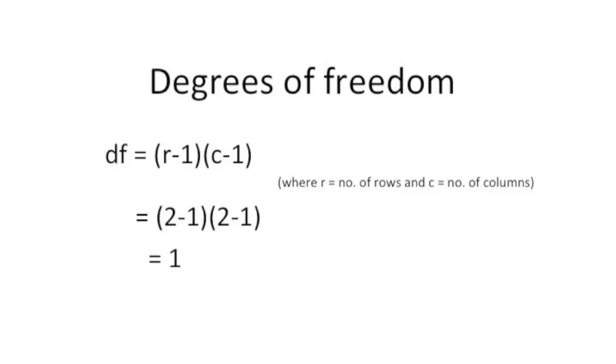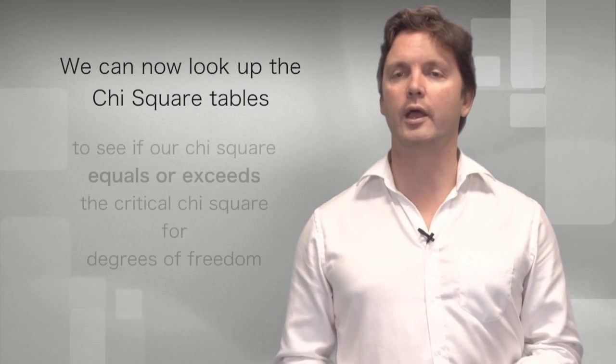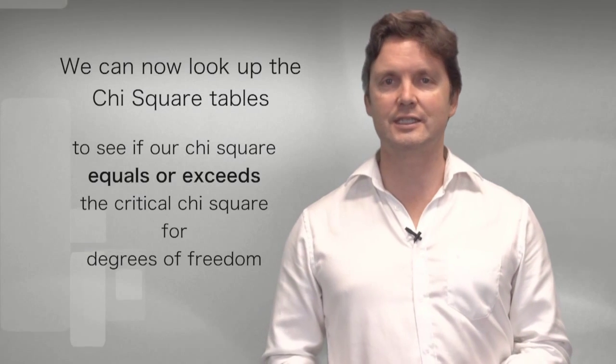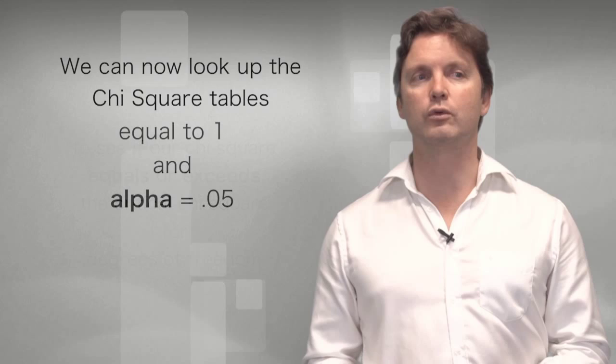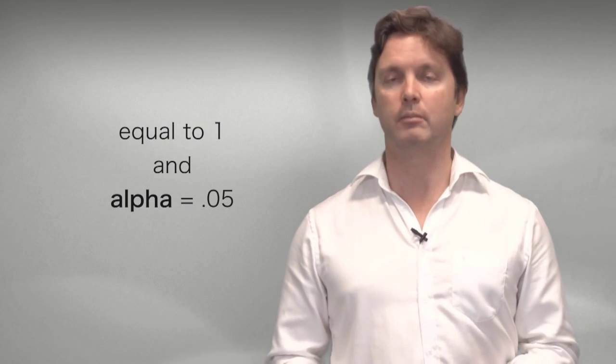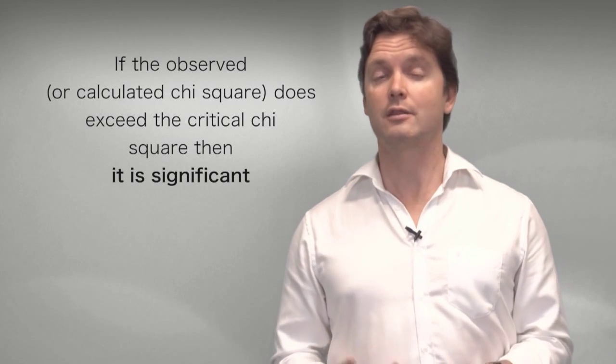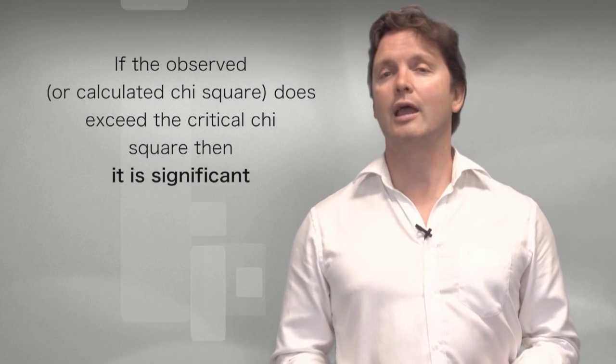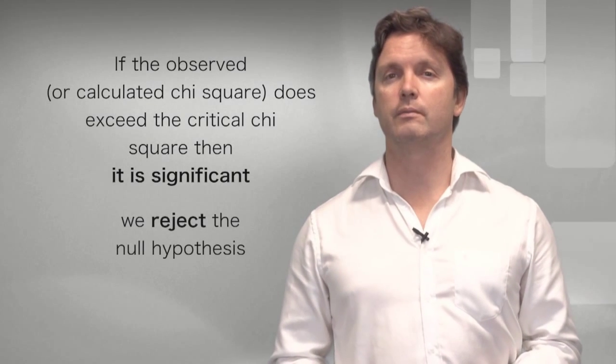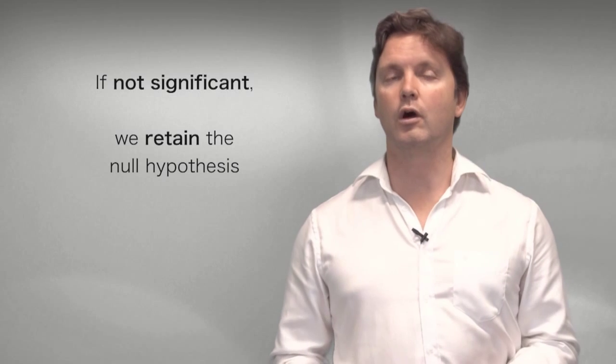So with this information at hand, we can now look up the chi-square table that exists in any statistics book to see if our chi-square equals or exceeds the critical chi-square for the degrees of freedom equal to 1 and an alpha of 0.05. Now if the observed or the calculated chi-square that we've just calculated does exceed the critical chi-square, then it is significant and we reject the null hypothesis. Of course, if not significant, we retain the null hypothesis.